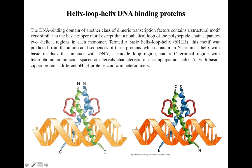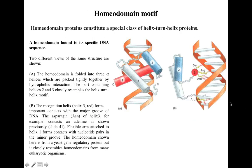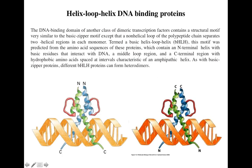They are connected by a short loop of amino acids. The main difference between helix-turn-helix motifs and helix-loop-helix motifs is that in helix-turn-helix motifs, the two alpha helices are connected by a short strand of amino acids, and this short strand is not made into a loop. While in helix-loop-helix DNA binding proteins, the two alpha helices are connected to each other by a short loop of amino acids.